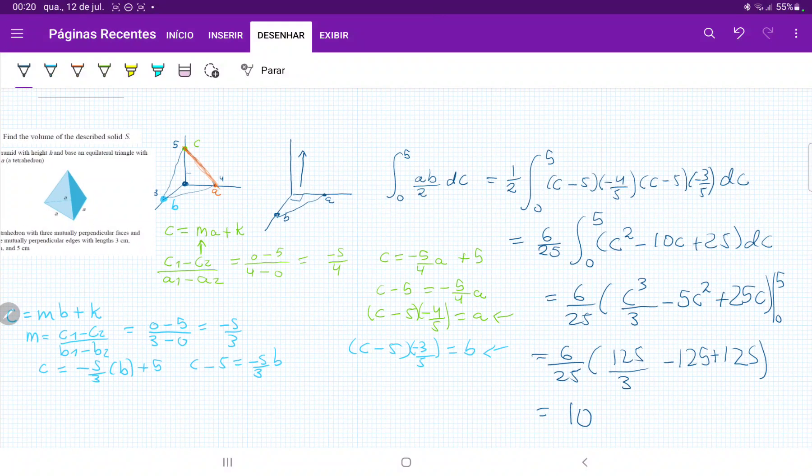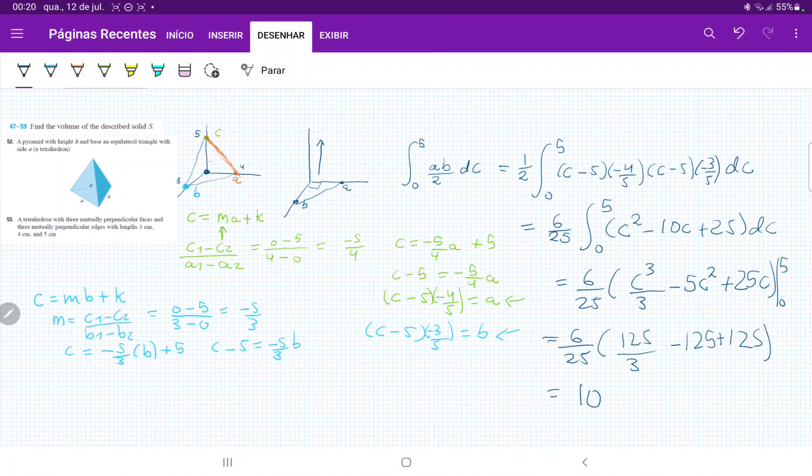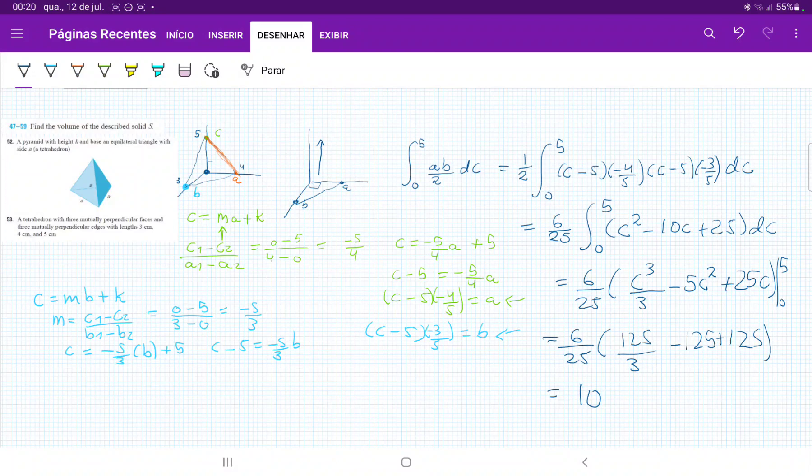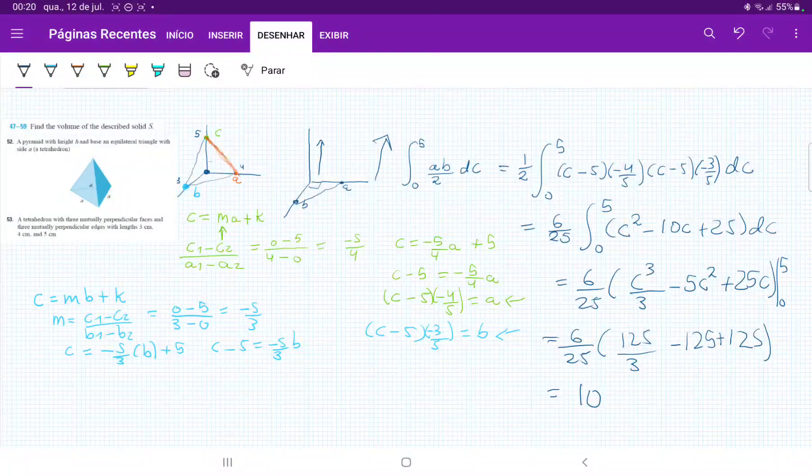And that is what we get with the volume for this tetrahedron that has three mutually perpendicular faces whose lengths are 3, 4, and 5. So remember that we just took the triangle AB, and then we stacked it up across the C axis. And then once we got that the area of this triangle was just AB over 2, all we did next was express A in terms of C, and express B in terms of C, so that we could integrate it across the C axis.